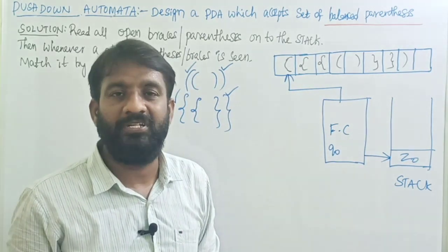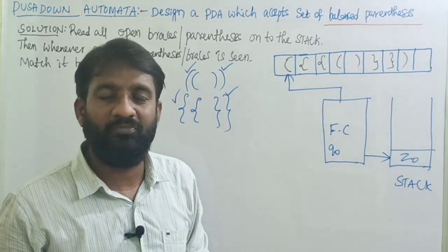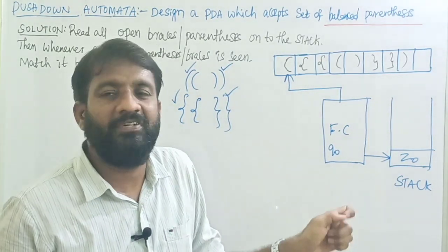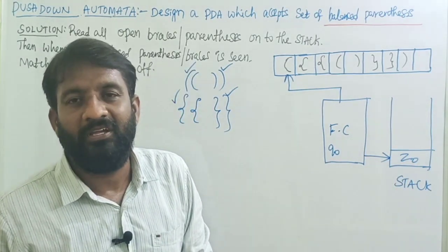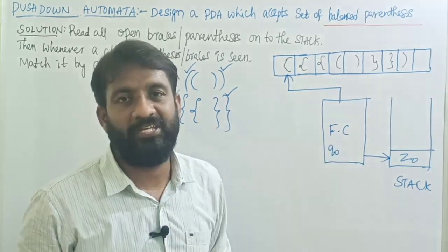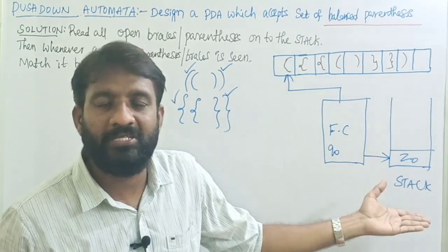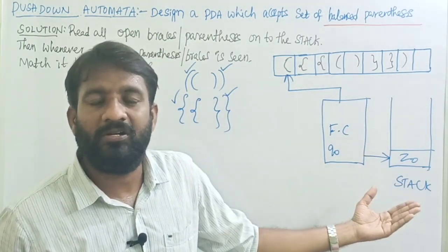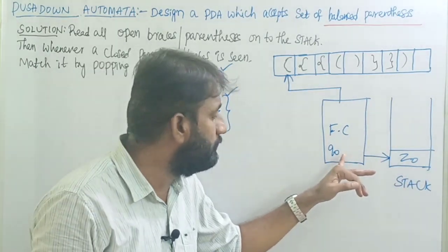After all open symbols are read, try to read the closed symbols. Because we are designing a pushdown automaton for balanced parentheses, if you read a closed brace, the top of the stack must be an open brace. If you read a closed parenthesis, the top of the stack must be an open parenthesis. For each closed symbol, pop one open symbol from the stack so the stack becomes empty, then move to the final state.